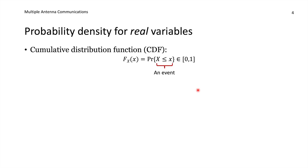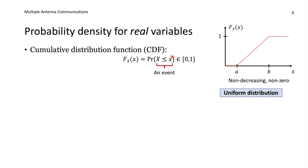Let's define some properties of real-valued random variables. The cumulative distribution function, or CDF, denoted with an uppercase F, is the probability that our random variable takes a realization smaller than a particular number. As we increase this threshold, the event grows in size, so the CDF is non-decreasing. For example, the uniform distribution gives values between a and b with equal probability: the CDF is 0 below a, 1 above b, and increases linearly in between.